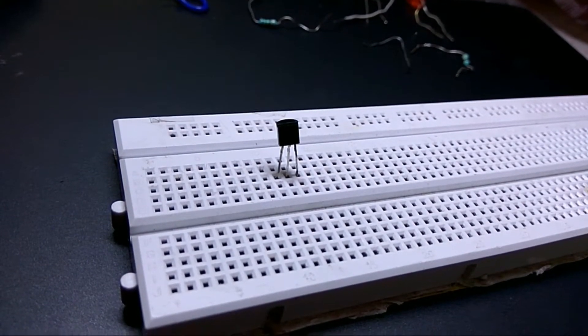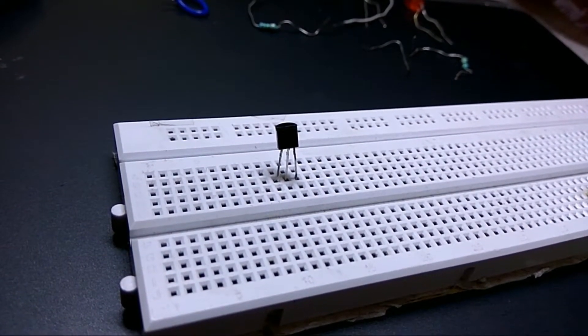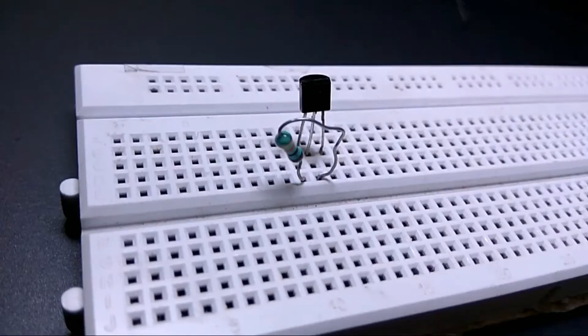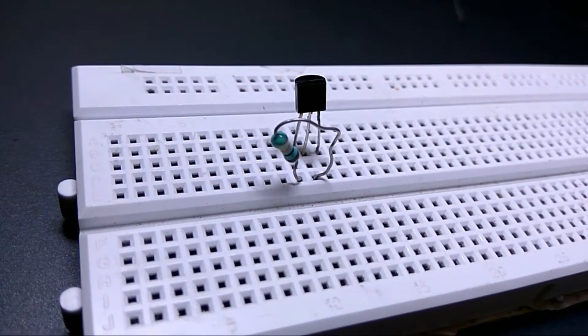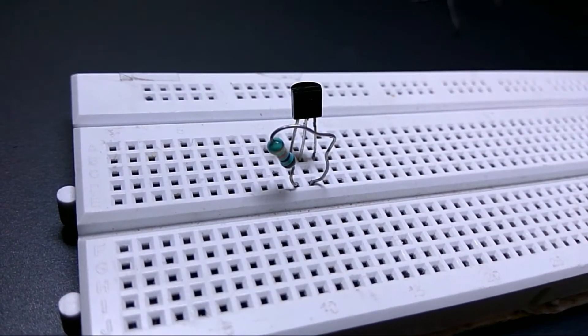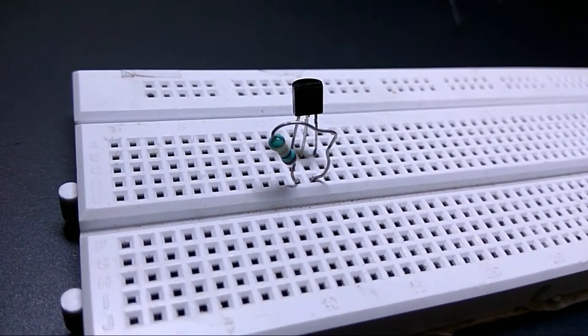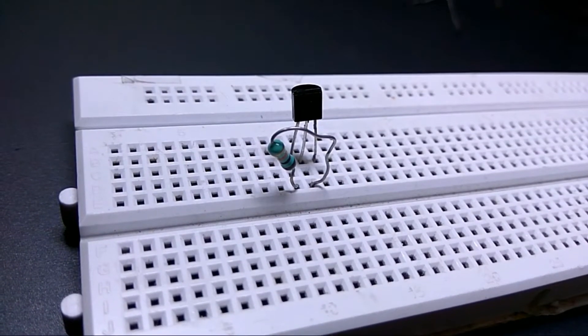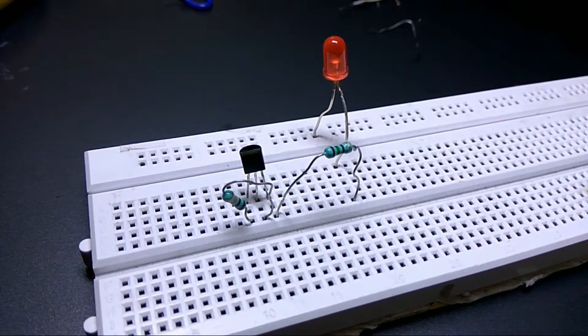Connect the collector and base of the transistor using 10K ohms resistor. The second step is to connect the positive terminal of the LED to emitter of the transistor using 150 ohms resistor and negative terminal to ground.